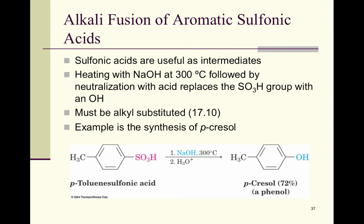A base comes in, grabs that hydrogen, and the pair of electrons causes a carbon-carbon double bond, reinstating aromaticity to give benzene sulfonic acid. Benzene sulfonic acid is typically drawn as SO3H. These are great intermediates: taking benzene sulfonic acid and heating it with sodium hydroxide followed by neutralization can change the SO3H to an OH group — though the benzene must be alkyl-substituted with a CH3 group for this reaction to occur.